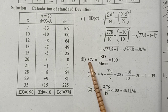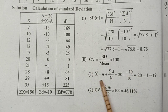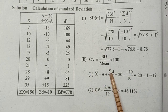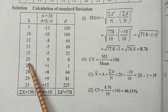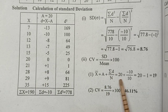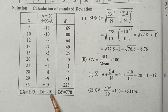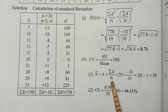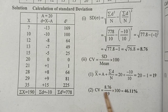For coefficient of variance, we first find the mean using the assumed mean formula: x-bar equals assumed mean plus sigma D divided by n. Then coefficient of variance equals standard deviation divided by mean, multiplied by 100.